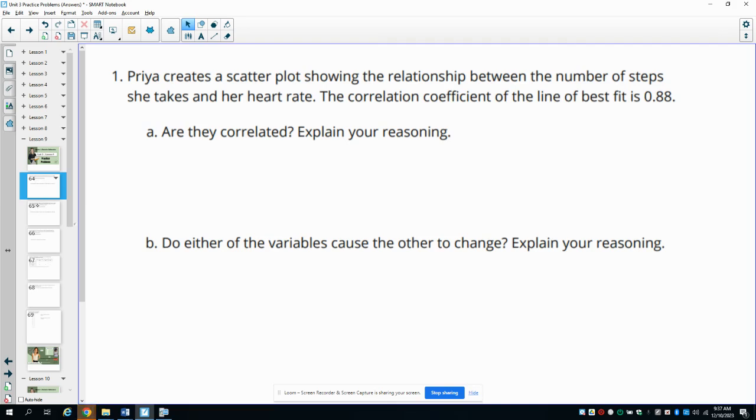Number one tells us that Priya creates a scatterplot showing the relationship between the number of steps she takes and her heart rate. The correlation coefficient of the line of best fit is 0.88. Are they correlated? Explain your reasoning.